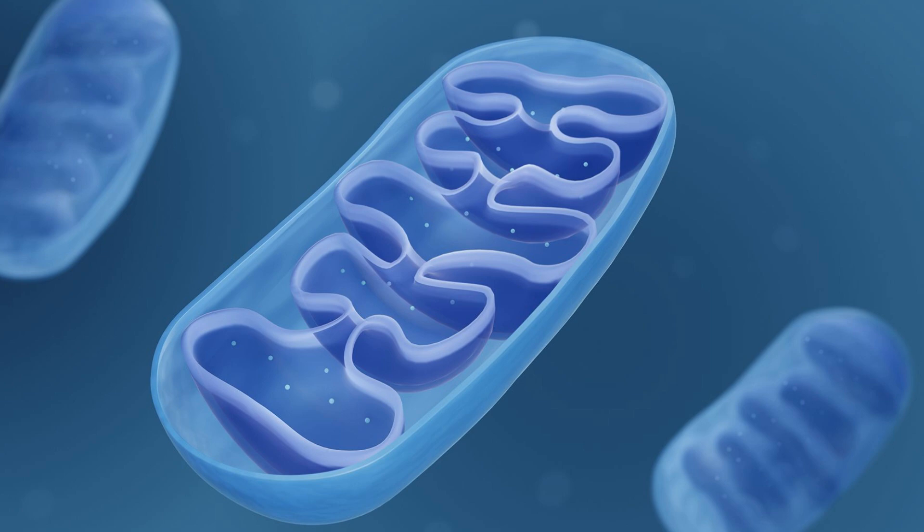Next is the mitochondria, which is the powerhouse of the cell. It generates power from food consumed by the amoeba.